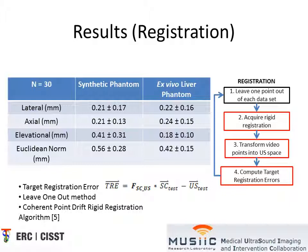We were also able to achieve a mean error of 420 microns and a standard deviation of 150 microns for the ex vivo liver tissue phantom. We note that these results are much better than the results currently in literature.